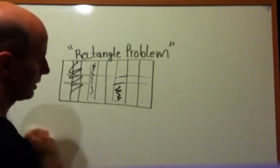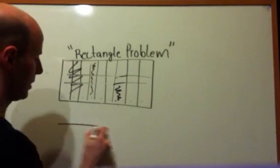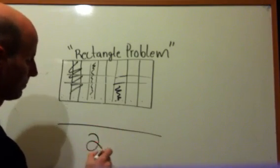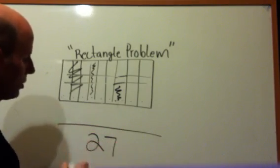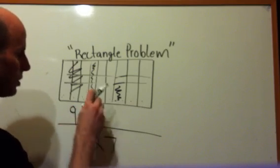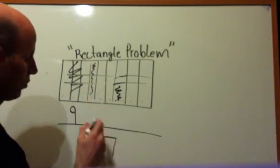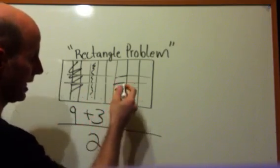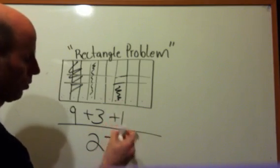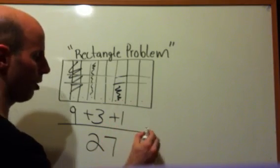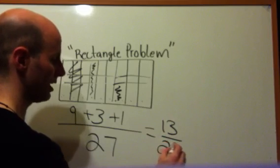So, you're probably saying, well, they all share 27th. So, one-third of 27 is nine. One-ninth of 27 is three. And one-twenty-seventh is just one. So, when I add up all my parts, I get 13 out of 27.